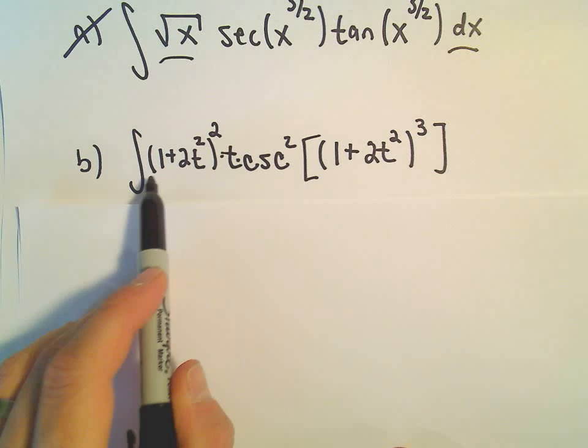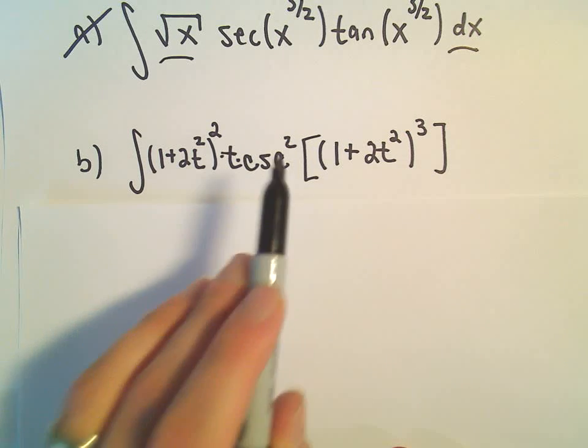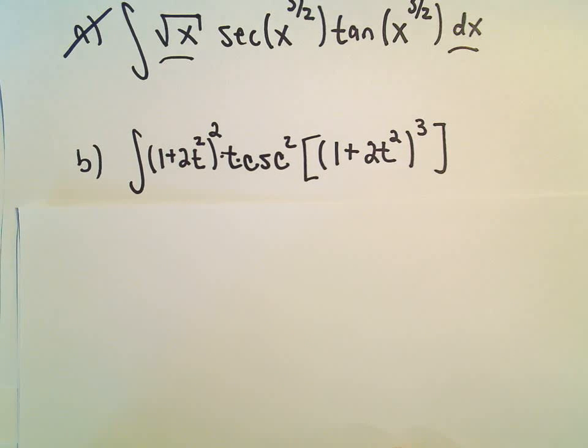So here we've got (1 + 2t²)² times t times cosecant squared of (1 + 2t²)³. Yuck. Okay, so this looks like a big mess.